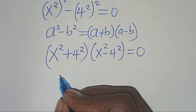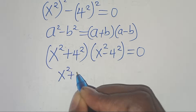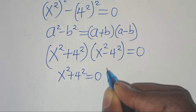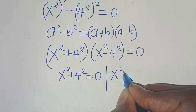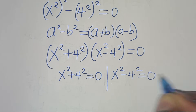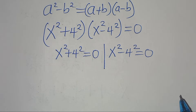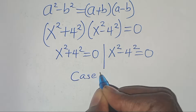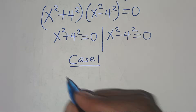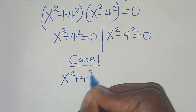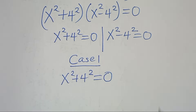This gives us two cases: x² + 4² = 0, and x² - 4² = 0. Let's start with Case 1, where x² + 4² equals 0.